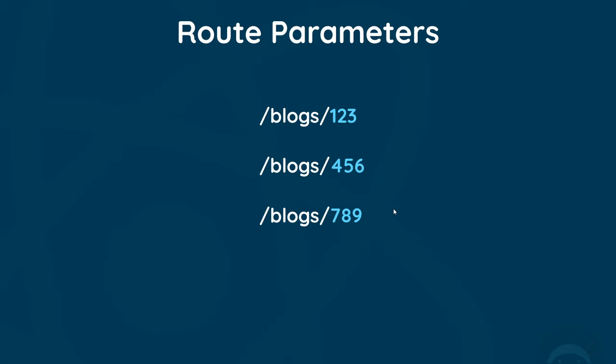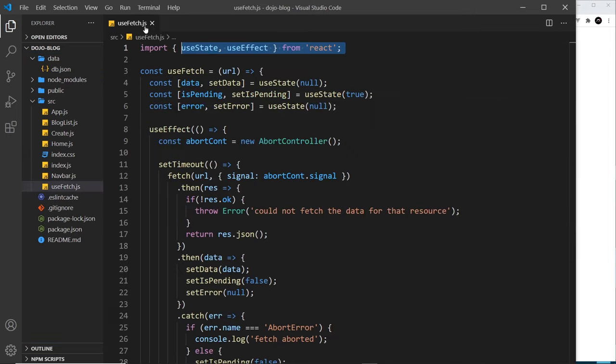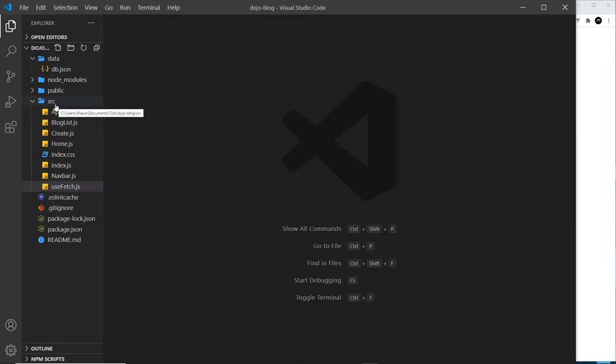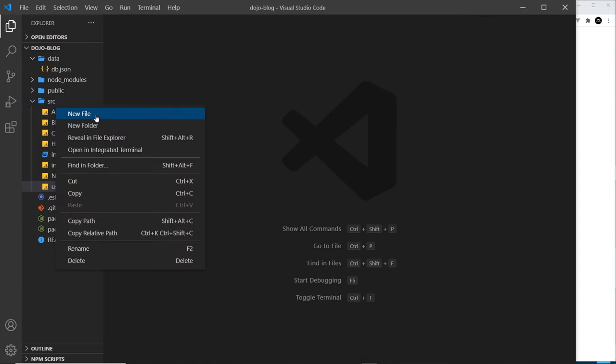This changeable part of the route is known as a route parameter — it's like a variable inside a route. In our React application we need to be able to use route parameters and access them from our components, so that in the component we can use these ids to fetch data for that particular blog. We're going to see how to set this up now, starting with creating a blog details component.